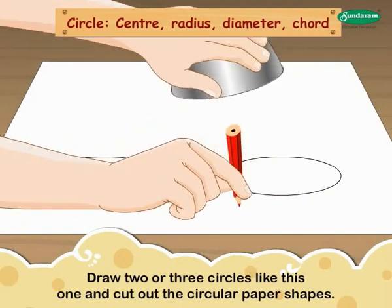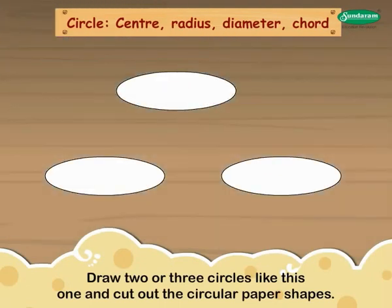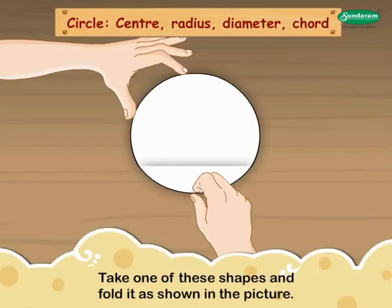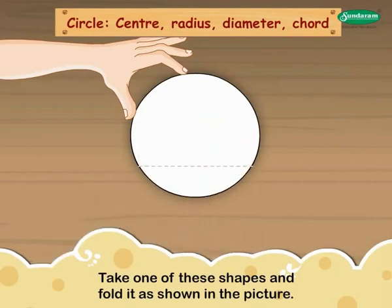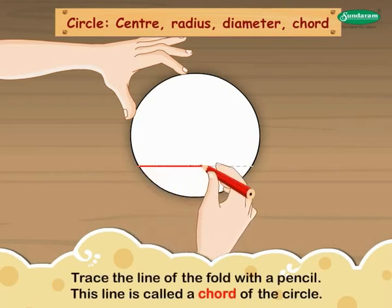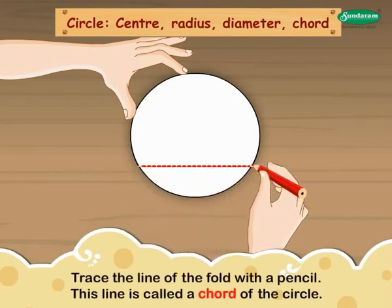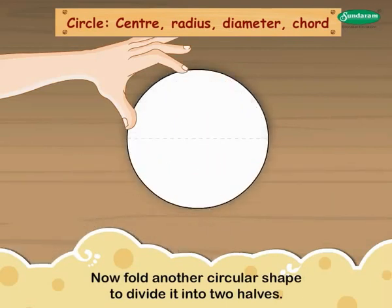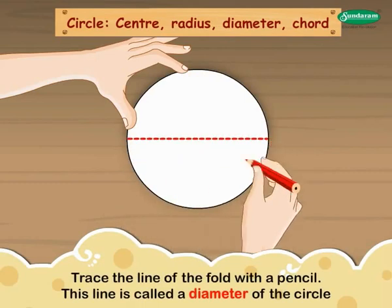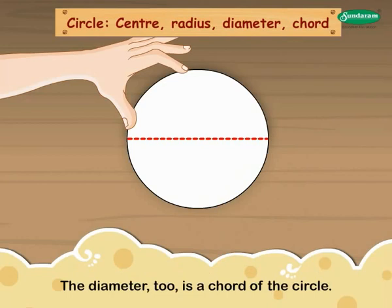Draw two or three circles like this one and cut out the circular paper shapes. Take one of these shapes and fold it as shown in the picture. Trace the line of the fold with a pencil. Now fold another circular shape to divide it into two halves. Trace the line of the fold with a pencil. This line is called a diameter of the circle. The diameter too is a chord of the circle.